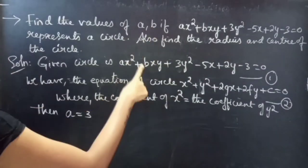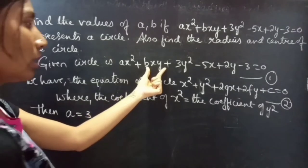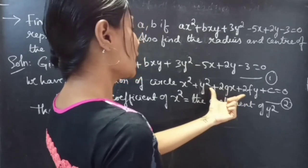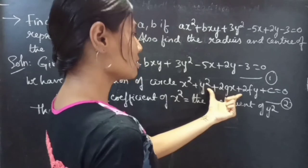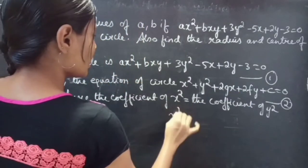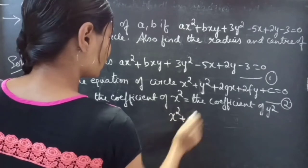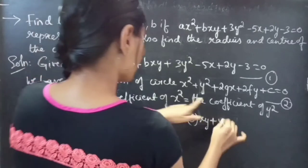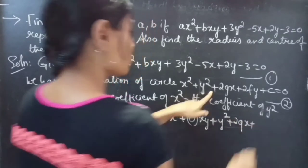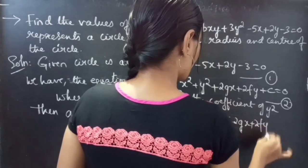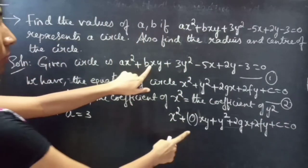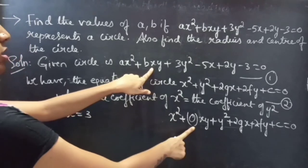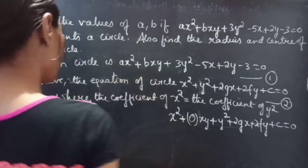We are also asked to find the value of B. Here we have the term B x y, but in the standard circle equation we don't have any term containing the product of x and y. So we can write the standard equation as x squared plus y squared plus 0 times x y plus 2gx plus 2fy plus c equals 0. By comparing the x y terms from equations 1 and 2, we get B equals 0.